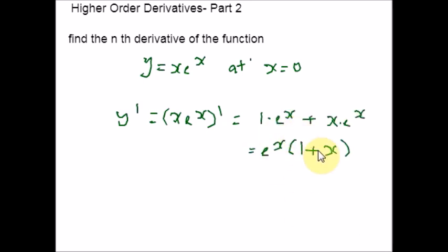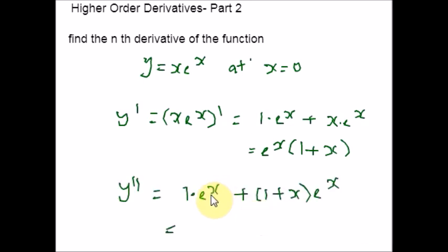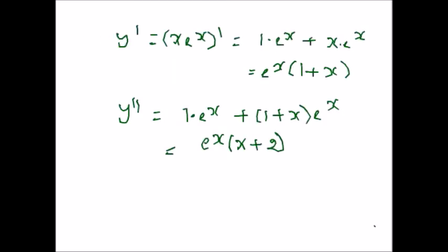Finding the first, second, and third derivatives continuously, we can write the generalized pattern. For the first derivative, using the product rule, since there is eˣ on both terms, we take it outside as a common factor. The second derivative: taking eˣ outside again leaves x + 2. You need not find the fourth derivative because just by doing till the third derivative, you can understand the pattern.